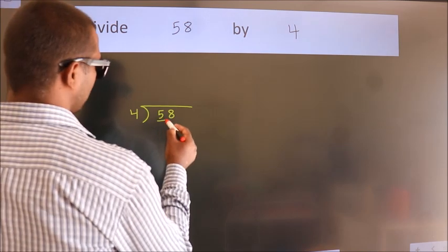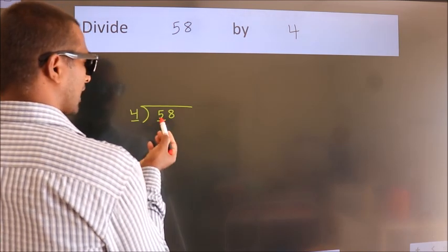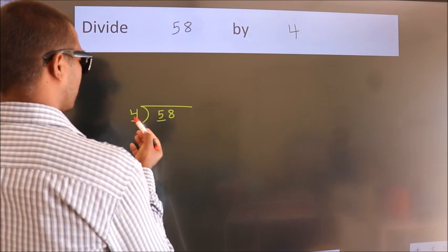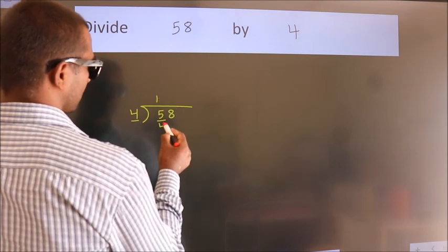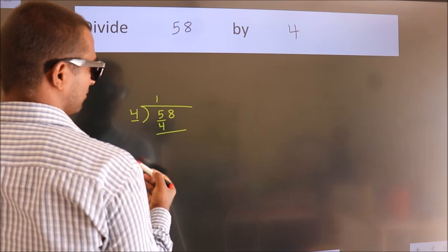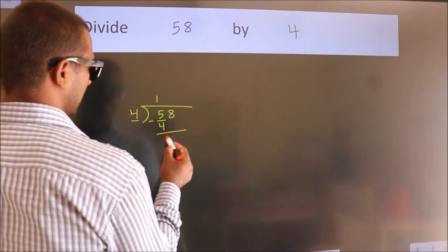Here we have 5, here 4. A number close to 5 in the 4 table is 4 once 4. Now we should subtract. We get 1.